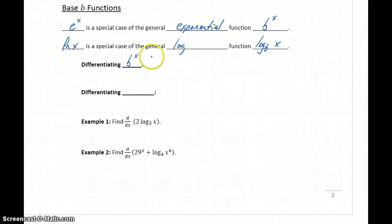To find the derivative of b to the x, we would start with something very similar to our derivative for e to the x. We start off with that function remaining essentially unchanged, just b to the x, but then we multiply by the natural log of whatever that base is.